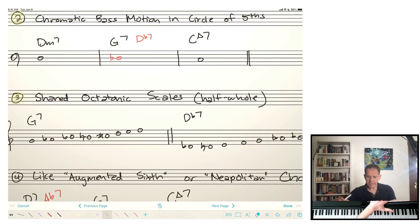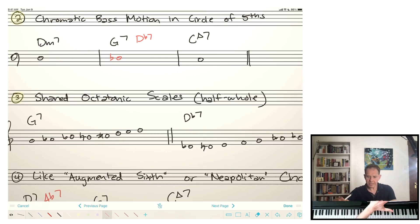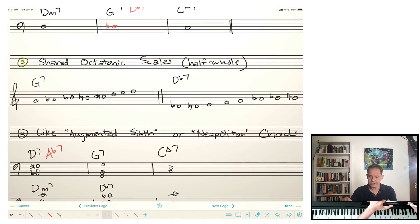Number 3 is really interesting. These share octatonic scales. For dominant chords, we use half-whole scales. And so for G7, I have the notes to the left. If you look at D-flat 7, it's all of the same pitches, just starting on D-flat. So D-flat is here, C-sharp is there. Then it goes to D, goes to D there, goes to E, goes to E there.